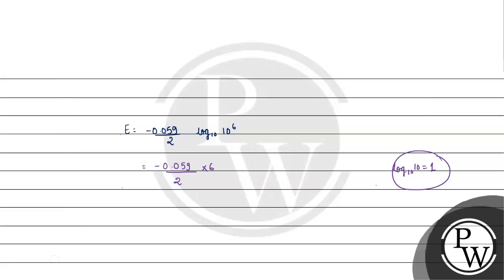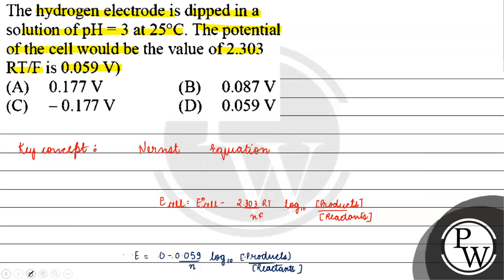Now, let's solve this. How much is it coming to us? Minus 0.177 volt. Coming back to the question, the answer for this question will be option C. I hope you understood it well. Thank you and all the best.